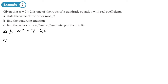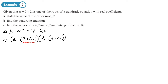Part b: find the quadratic equation. To do that, we write (z minus the first root)(z minus the second root), which is (z minus (7 + 2i))(z minus (7 - 2i)). It's a little more complicated than the real case because instead of a single number in each bracket we have a complex number.